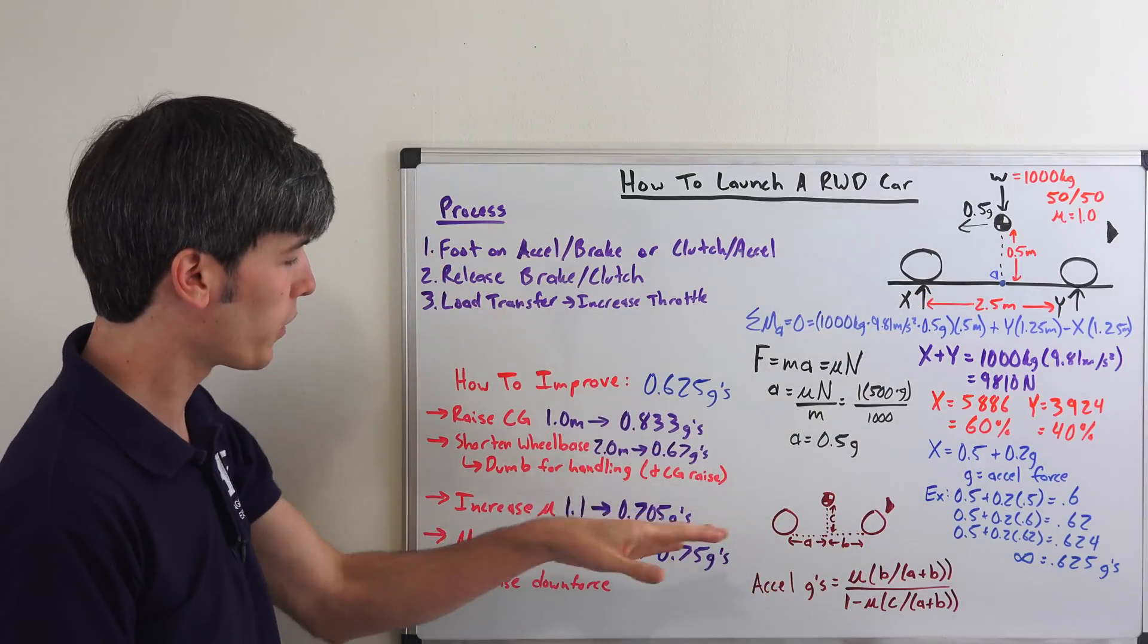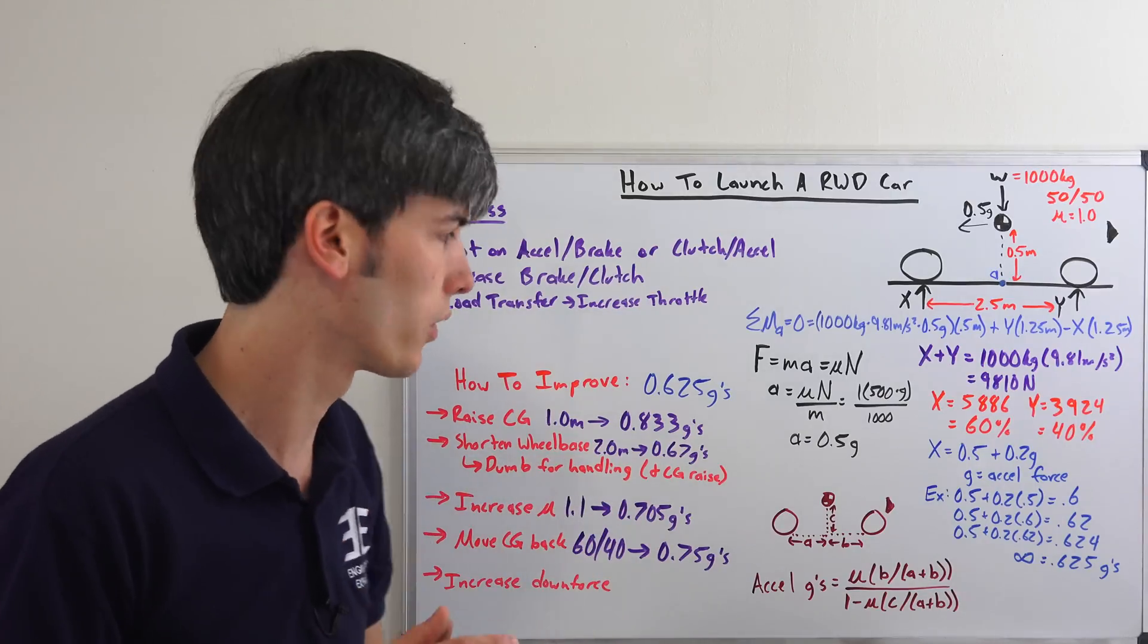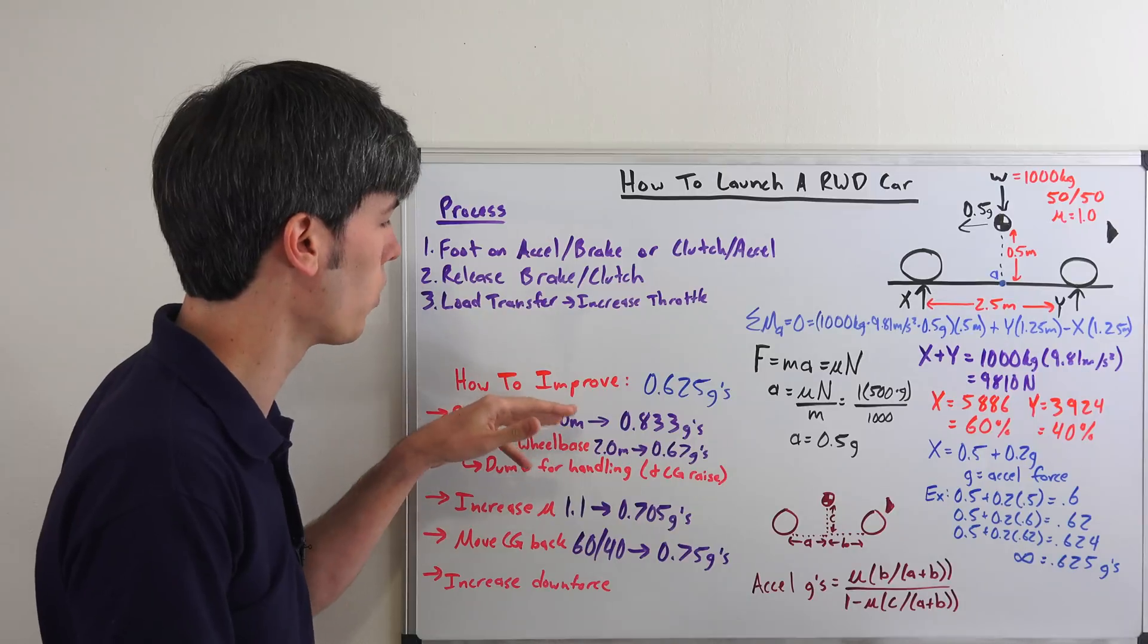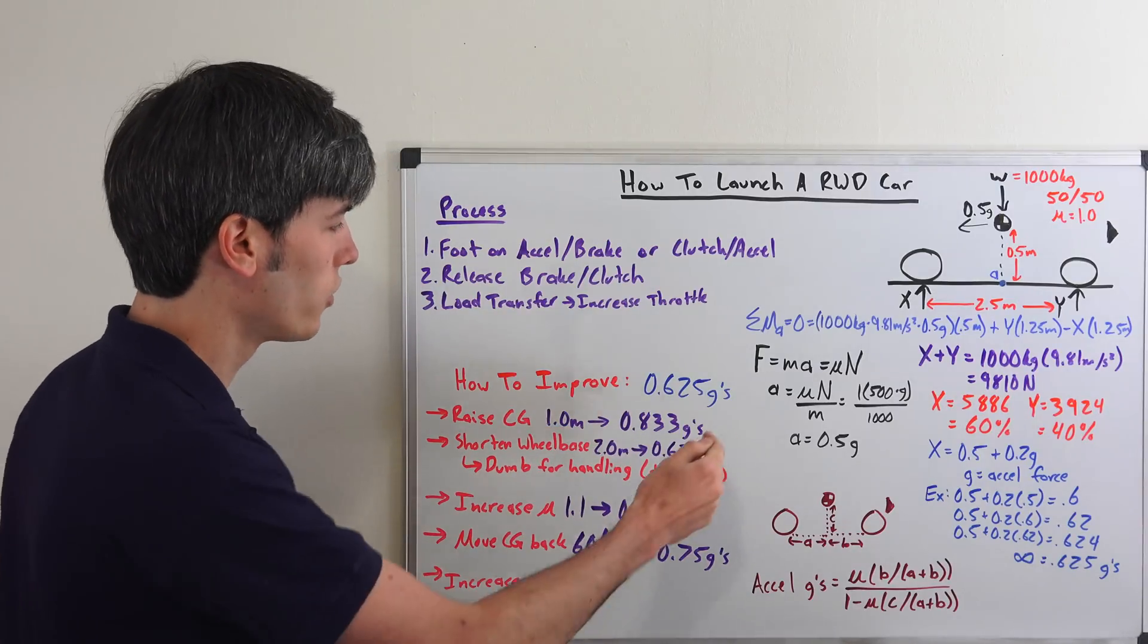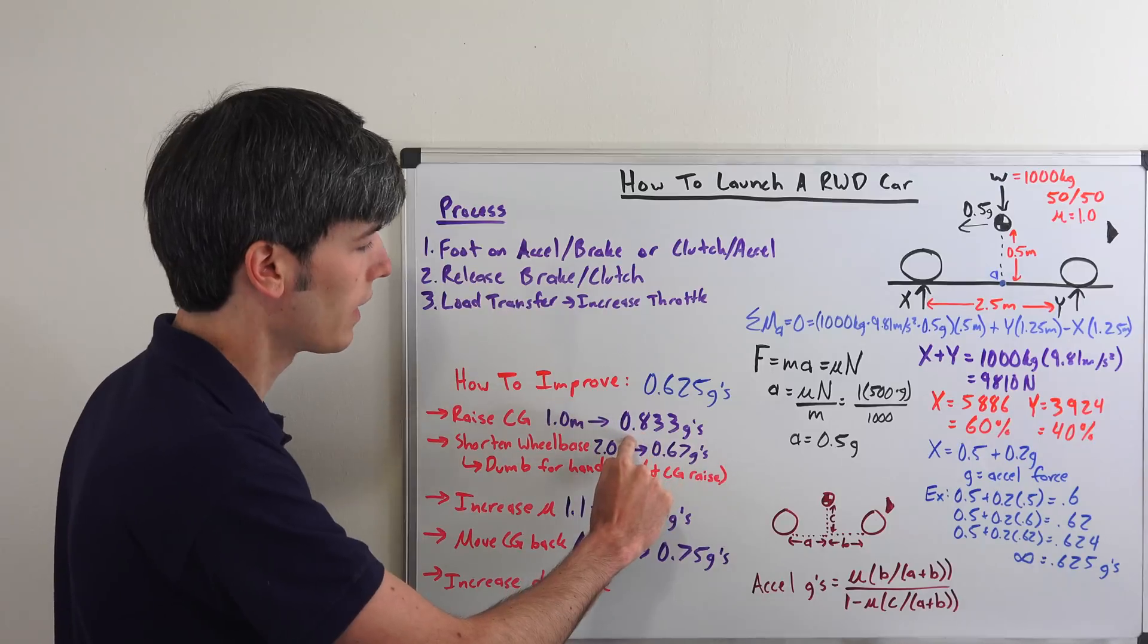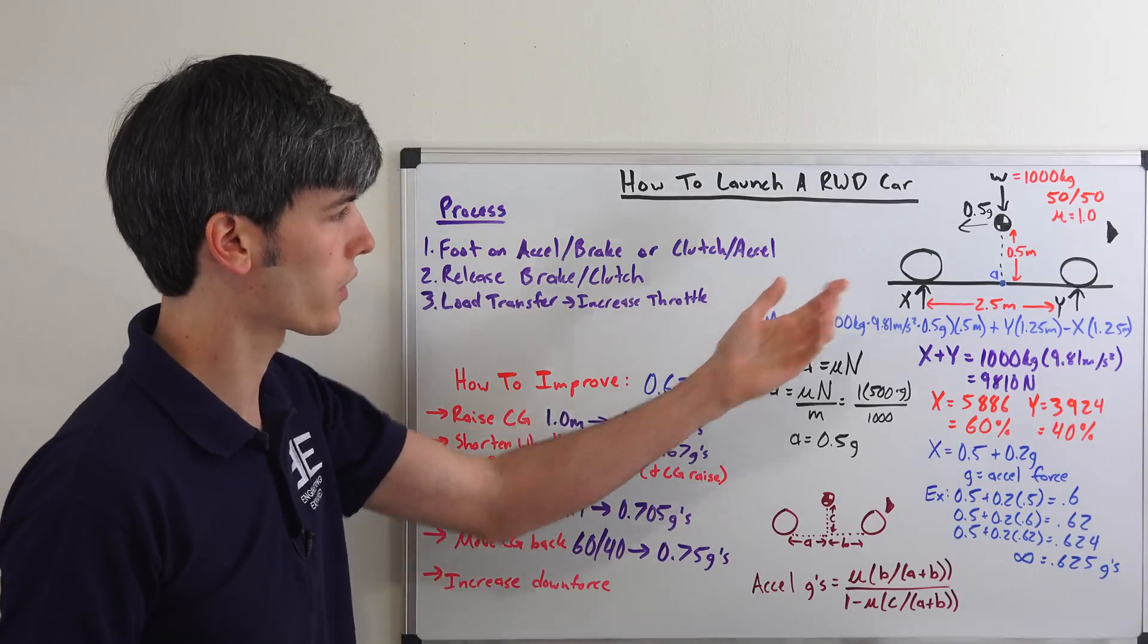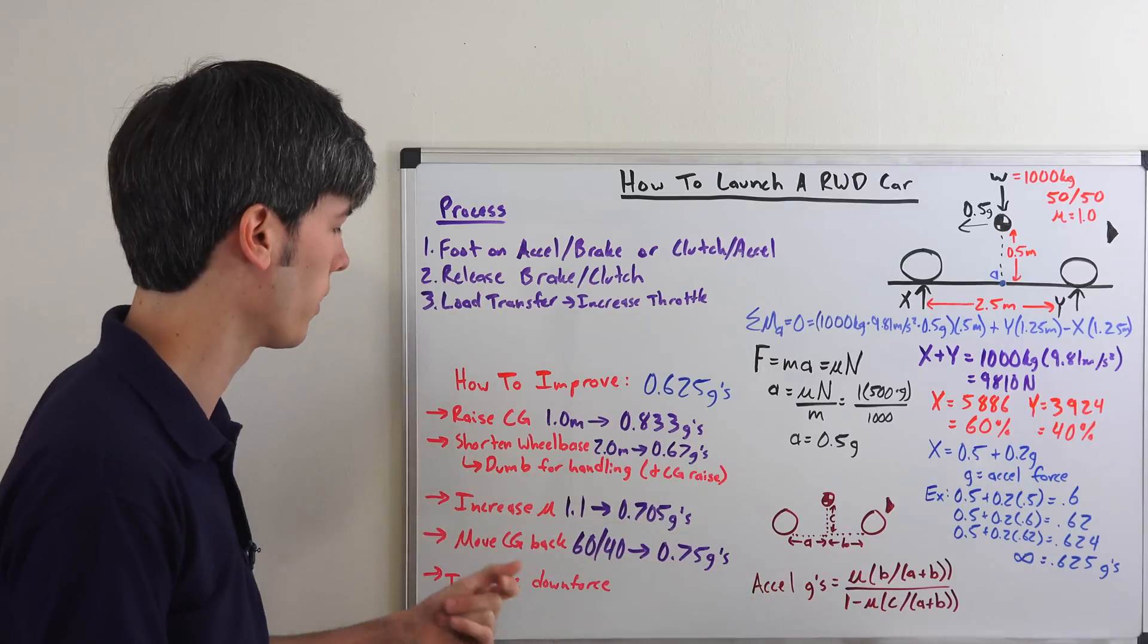Okay, so if we substitute, one of the ways we can improve the acceleration on the rear tires is if we substitute the center of gravity from 0.5 to 1 meter. So we're raising that center of gravity a whole half meter. And in doing that, you can see that we can now accelerate at 0.833 g's. So a significant improvement in the amount of traction we'll have on the rear tire. And that's just plugging all these numbers in this equation right here.